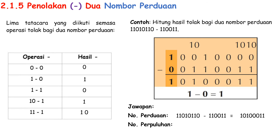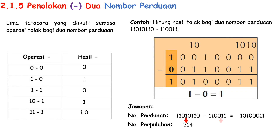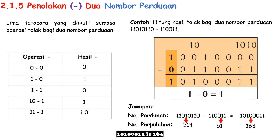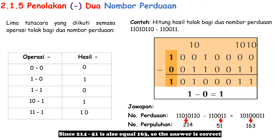11010110 is 214; 110011 is 51; and 10100011 is 163. Since 214 minus 51 also equals 163, the answer is correct.